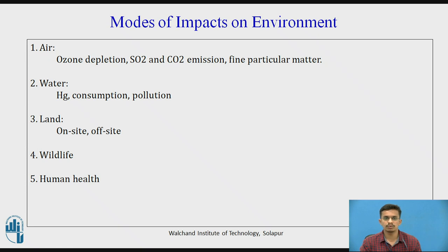The second mode of impact is water. Mercury gets dissolved in water, which causes several health issues. Also, the consumption of water for the generation of energy and the pollution caused by it. The third impact on the environment is land — both on-site and off-site. Then there is the impact of energy resources on wildlife and also on human health.